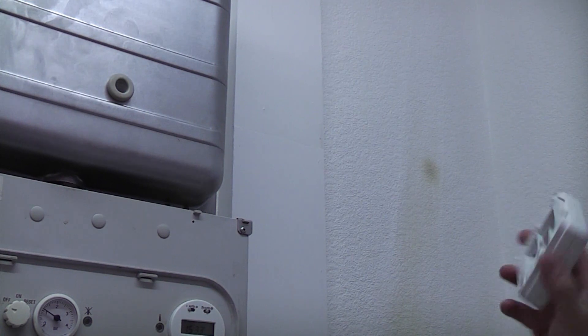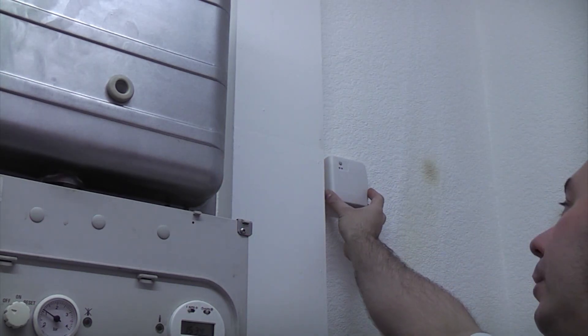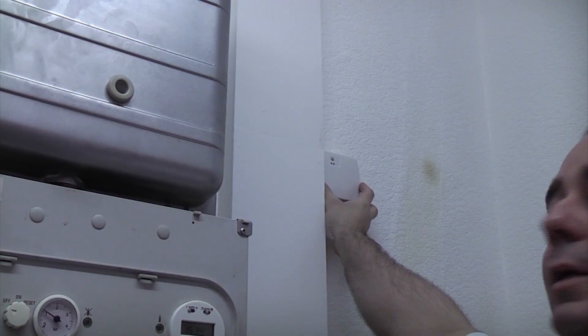Before we connect any wires to the boiler, I am going to start siting the actual receiver box, and I have read the instructions, and it says that it needs to be at least 30cm away from your actual boiler or anything metallic, such as a cooker or anything. So what I am going to do is I am going to stick it approximately there.